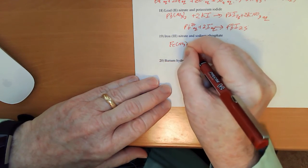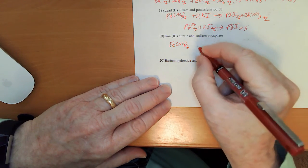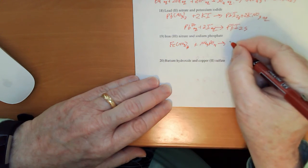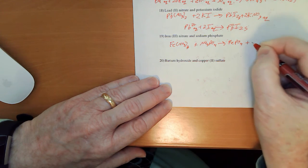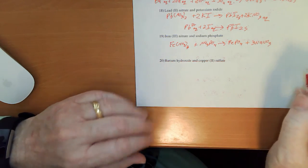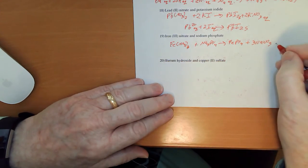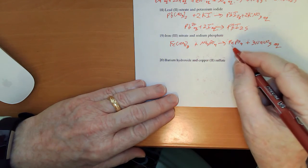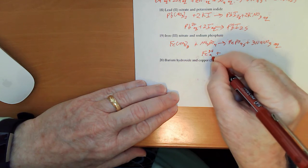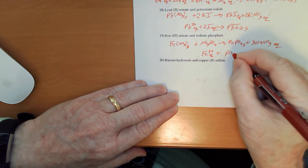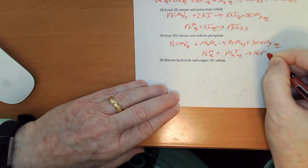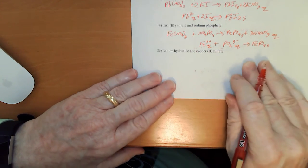Now, Fe NO3 sub 2 plus Na3PO4 to give me FePO4 plus NaNO3. I'm going to need a 3 on that. All the nitrates are soluble. Iron phosphate is going to be a solid. So, we have Fe 3 plus aqueous plus the PO4 3 minus aqueous to give me FePO4 solid.